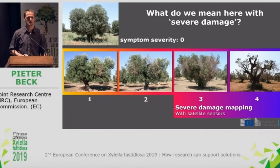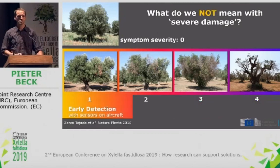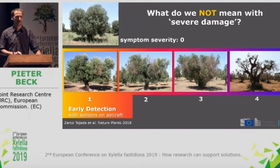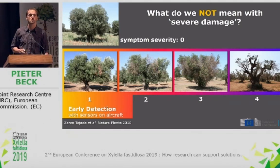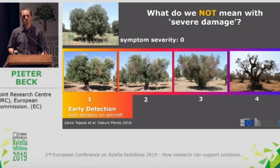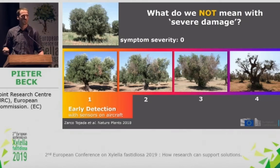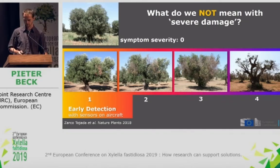That is what we try to monitor with satellite data. Just to be clear, we're not talking about early detection. Early detection we work on as well with sensors on aircraft — that's where you're trying to get those first symptoms on a tree as it moves out of looking healthy after infection. So let's make that clear: we're not trying to do early detection here; we're doing damage mapping.